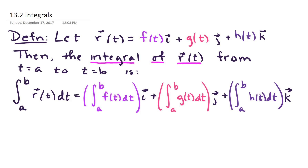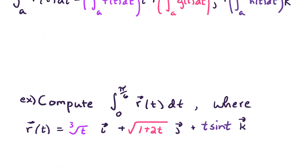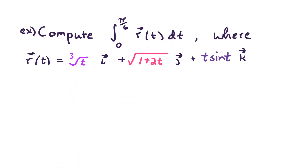So let's look at an example. We want to compute the definite integral from 0 to pi over 6 of r of t dt, where r of t is given by the cube root of t i, plus the square root of 1 plus 2t j, plus t times sine of t k.